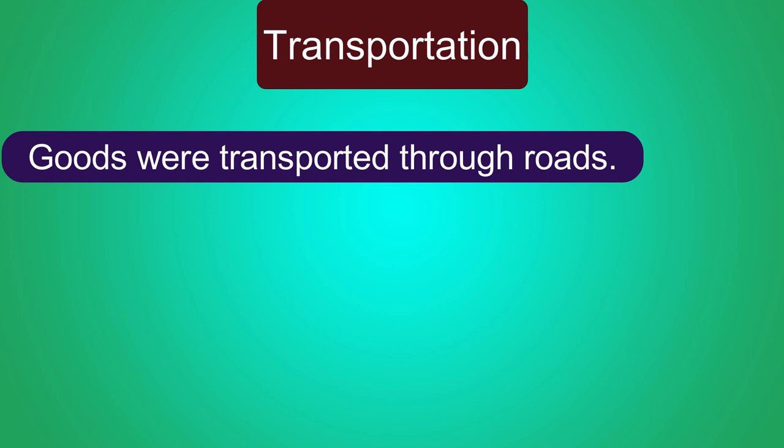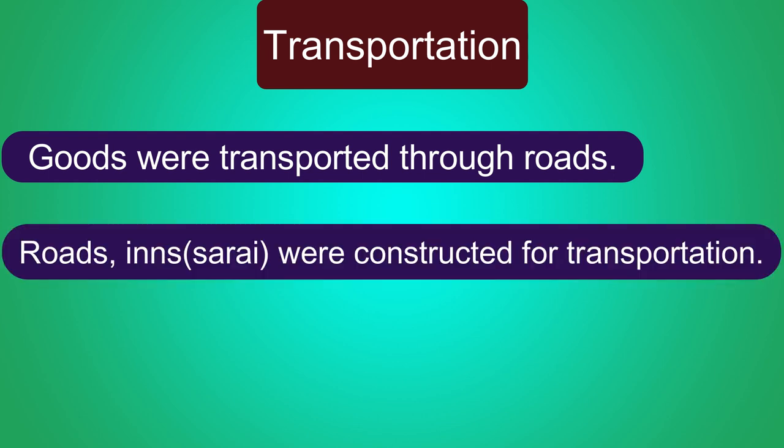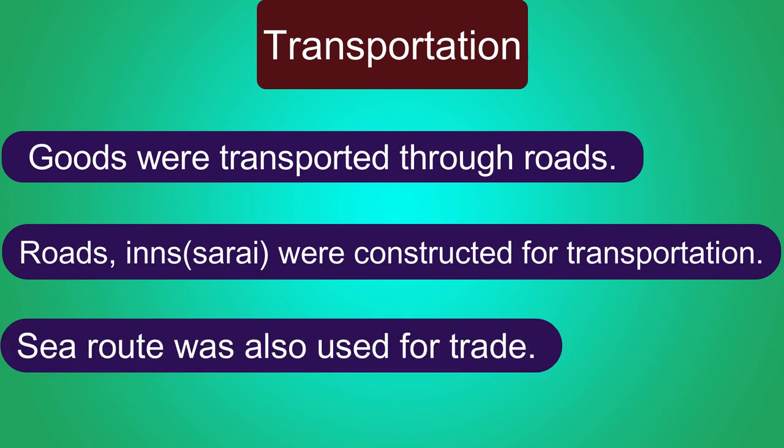Goods were transported through roads. On these routes, there were shady trees on both sides of the road. Roads and inns or sarayas were constructed for transportation. Sea routes were also used for trade.